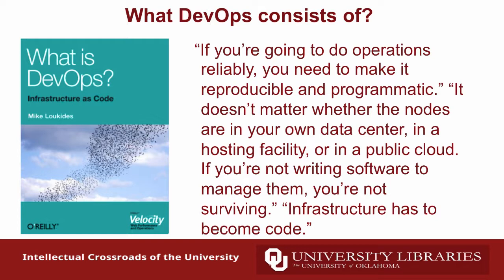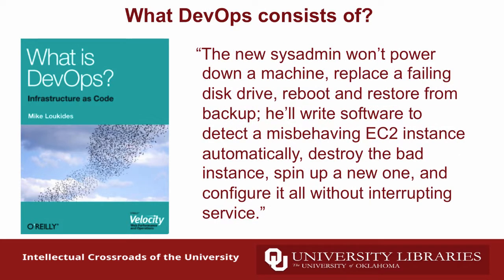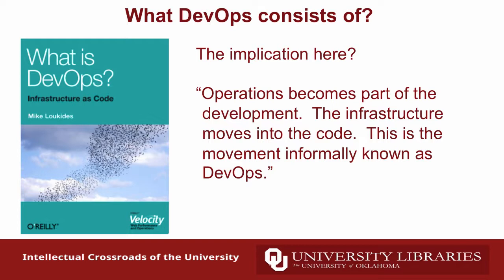If you're not writing software to manage these processes, you're not surviving - you're building a quagmire of overhead. Infrastructure has to become code, and infrastructure is not just software, it's hardware. The new system won't involve powering down a machine or replacing a failing drive manually - instead, you write software to detect a misbehaving EC2 instance, destroy the bad instance, spin up a new one, and configure it - all with no interruption in service. Operations really becomes part of development, and that's where the DevOps name comes from.